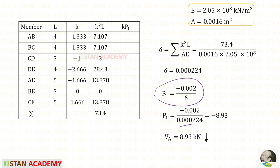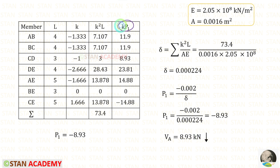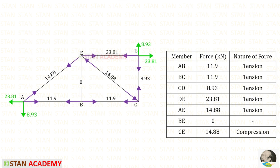Applying the values in the formula, we get VA = −8.93. Since we got a negative value, our assumption is incorrect — we assumed VA acting upwards, but actually it is acting downwards. Then using the member force formula, we can find all of the member forces. All member forces have been entered in the truss. Now we are going to end this session. Thank you for watching this video.